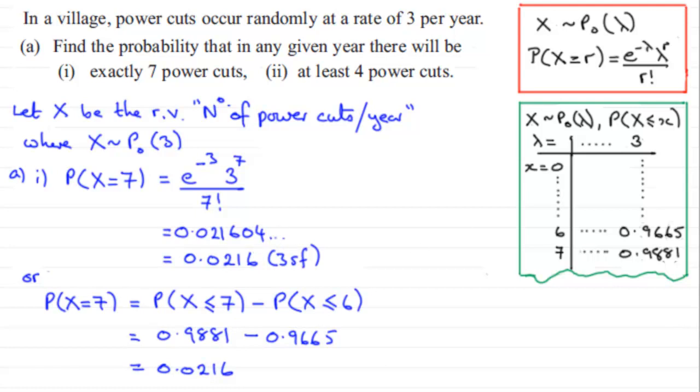Now, in the second part of this one, we've got to work out the probability that there'll be at least 4 power cuts. So for that one, part two, the probability then that X is at least 4 power cuts is going to be X is greater than or equal to 4.